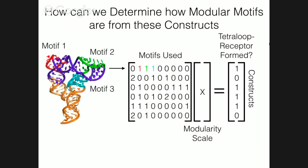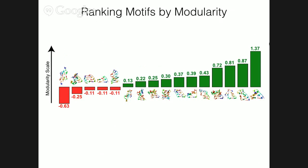So here's the strategy we ended up going with. We can use simple linear algebra to get a so-called modularity scale for each motif. We do this by recording which motifs were used in which construct, and then using whether the tetraloop receptor was formed or not as a marker for success. We can then apply the traditional MX = B and solve for X, which should be an array of the same length as the number of motifs. We believe these numbers are related to how likely the motif is to be in the conformation observed in the crystal structure.